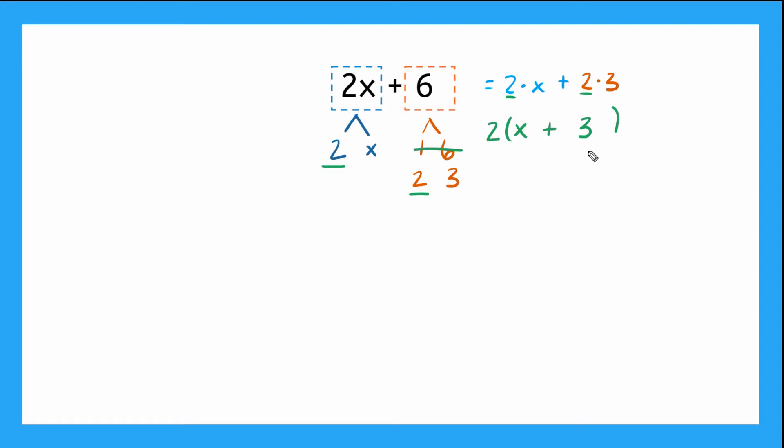So this is telling me that my factored form of 2x plus 6 is equal to 2 times x plus 3. So my factors of 2x plus 6 are 2 and x plus 3. And when I multiply them together I should get 2x plus 6. But I can test that right? If I want to know if 2 times x plus 3 is equal to 2x plus 6 what can I do? I can use the distributive property.